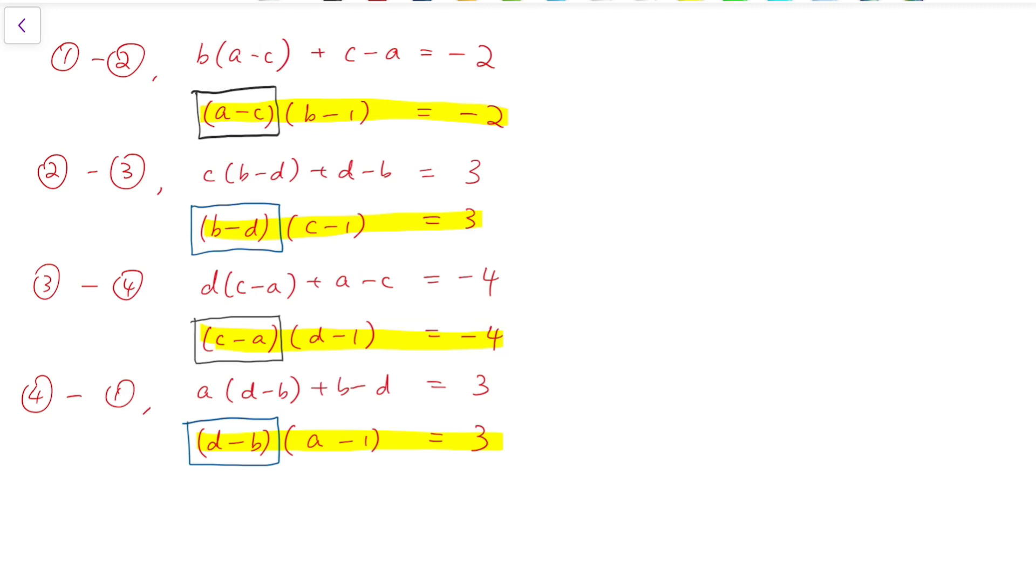So to make use of these four equations, I'm going to rewrite the third one that I've got as a minus c multiplied by d minus 1 equals 4. So multiplying both sides by minus 1. And the reason that I do this is that these two equations now have a common factor at the left, which is a minus c.